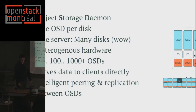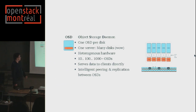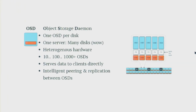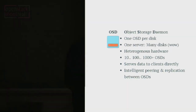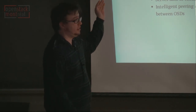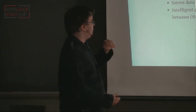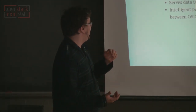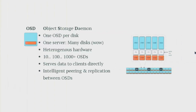The Ceph daemons. The daemon that works with actual hard drives is called OSD — Object Storage Daemon. The OSD is essentially a piece of software that takes over an actual hard drive. What happens is you'll have one daemon per disk. For one server with many disks, you'll have many OSDs — for a server with eight disks, you're going to have eight OSDs.